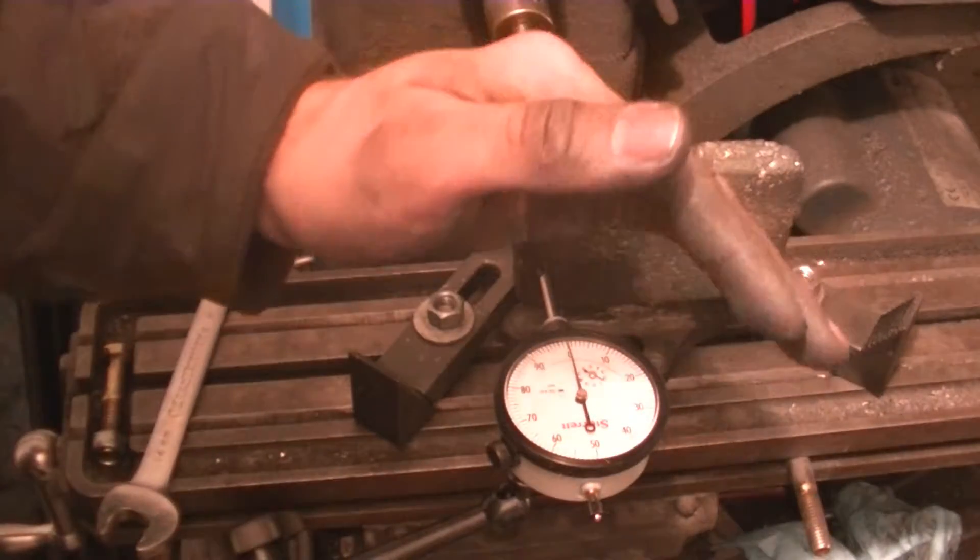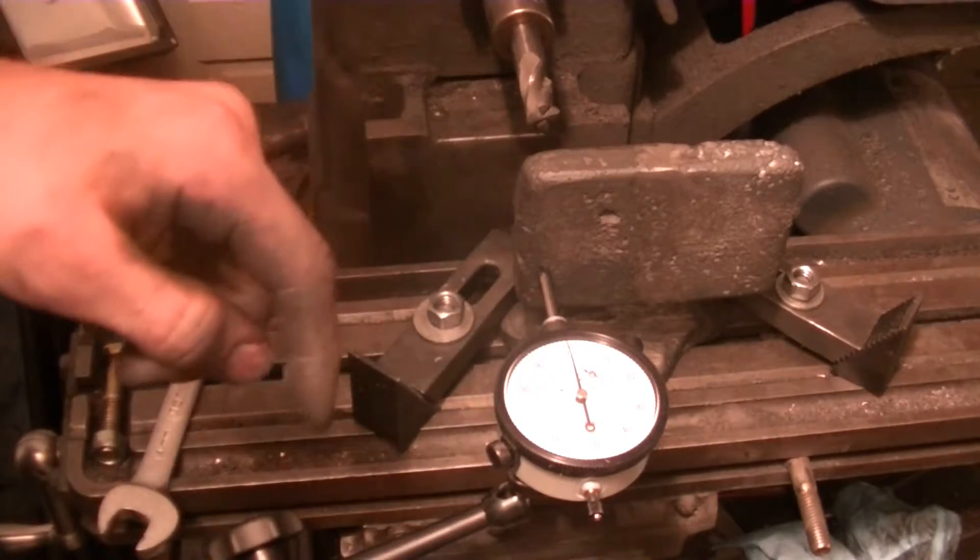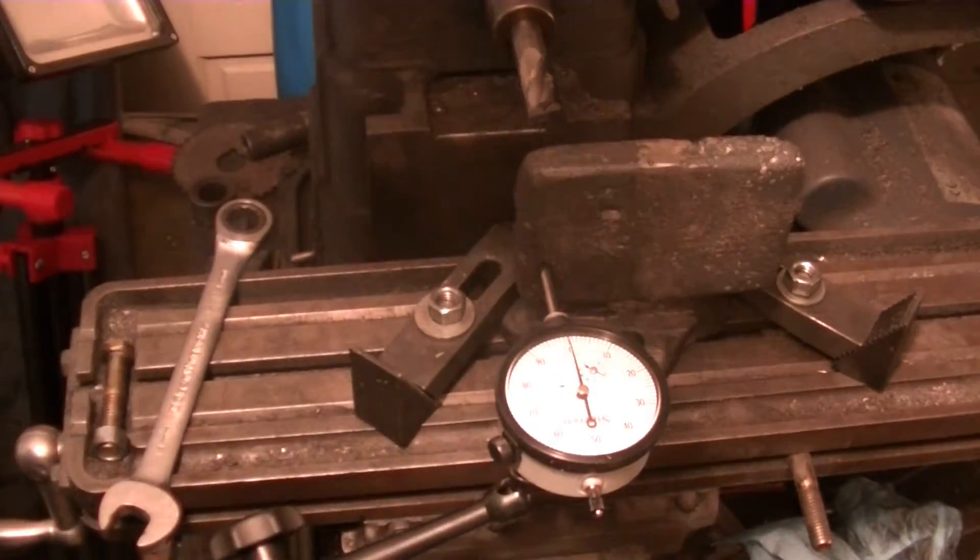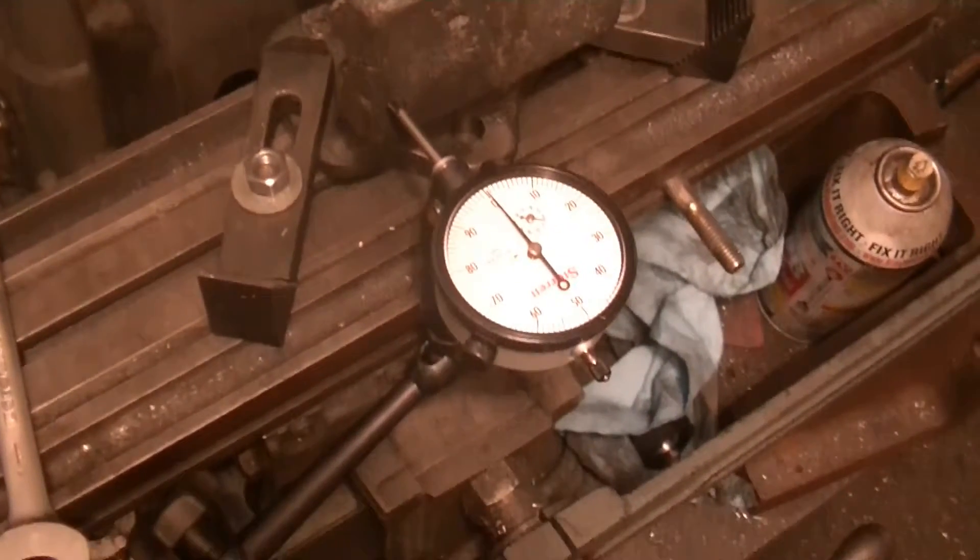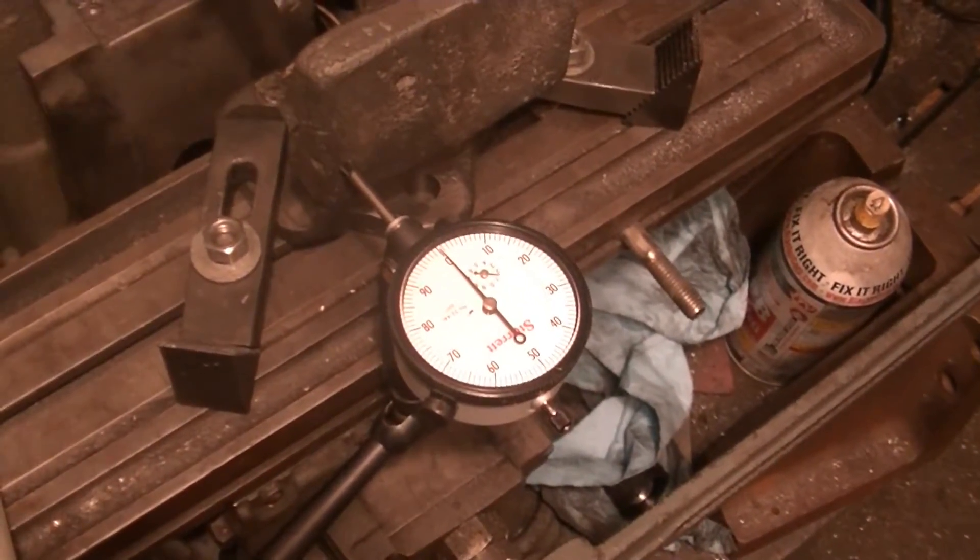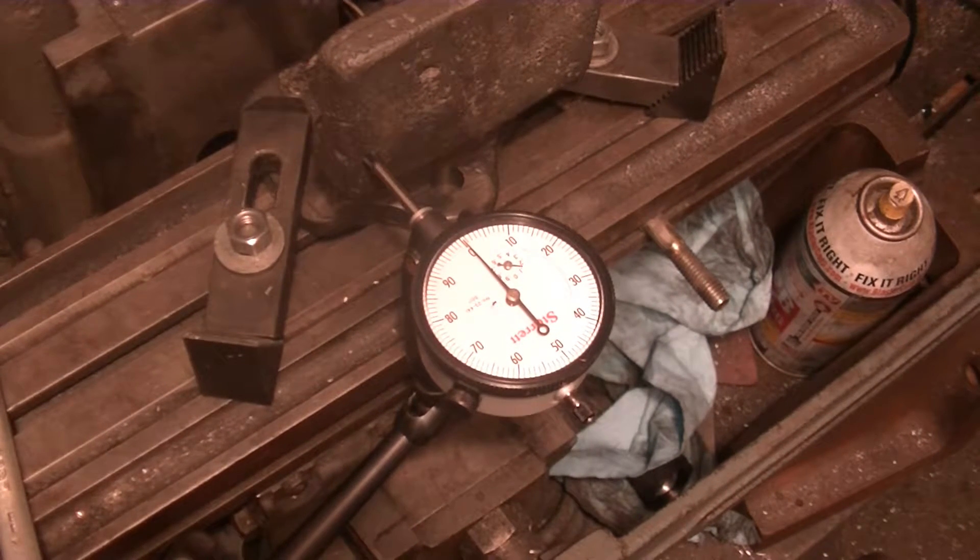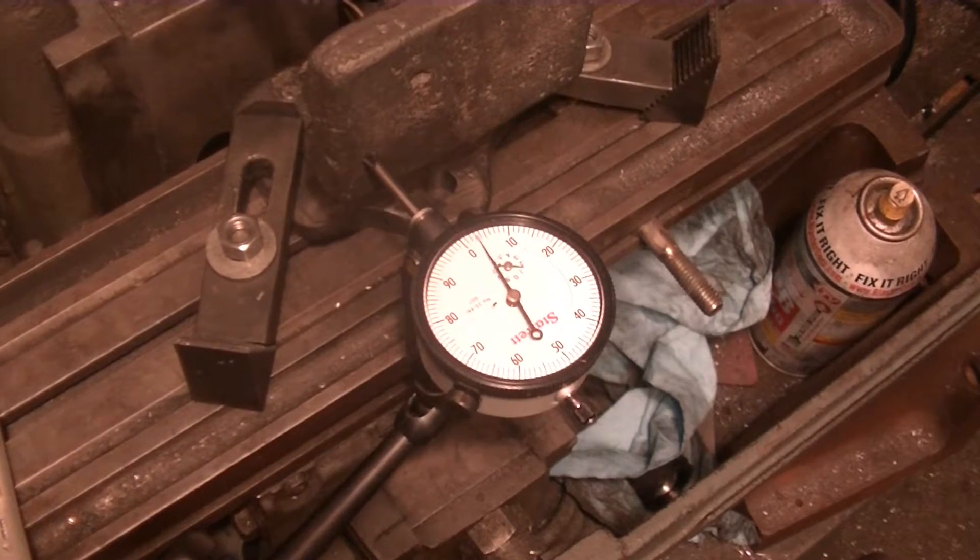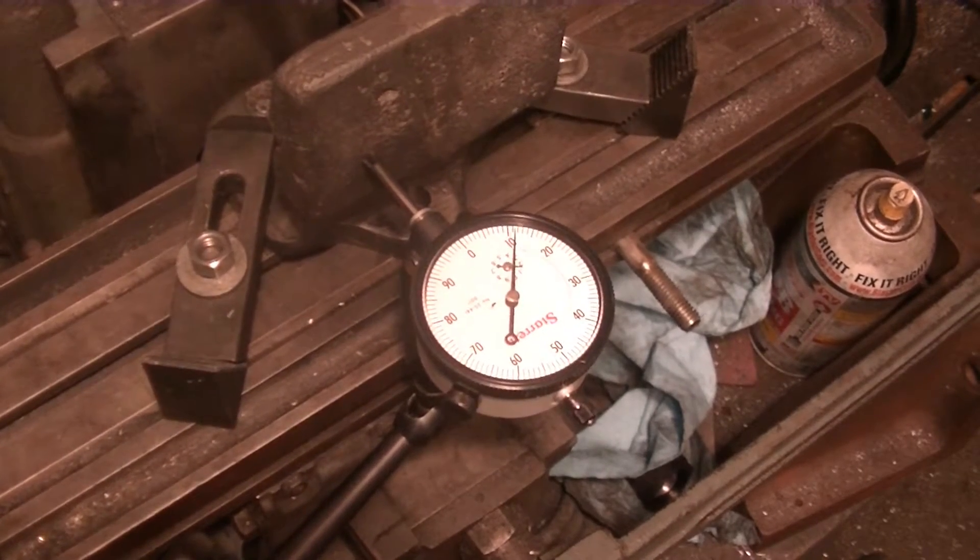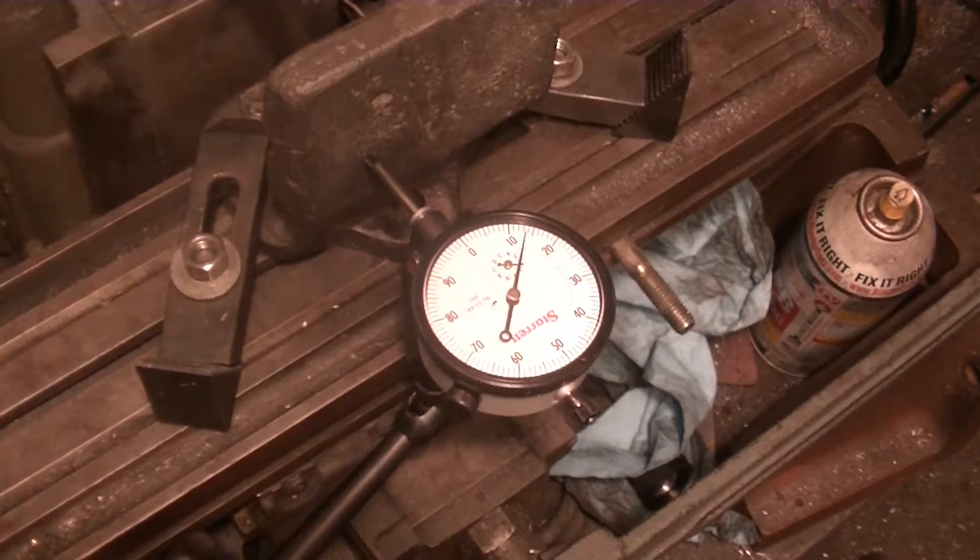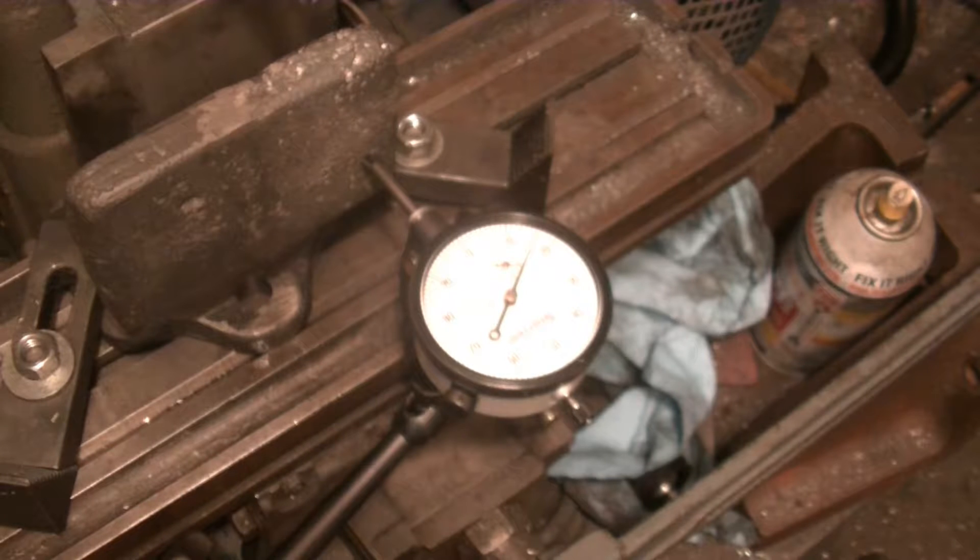So we're kind of set up here. I got the indicator on the back of the casting. Now this is a rough casting so I don't expect it's not going to be like a smooth indicator trip across that surface, but I want to get it more or less straight. So we're starting at zero on this end, there's going to be undulations, but if I go to the other end it should be pretty close.